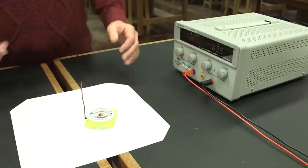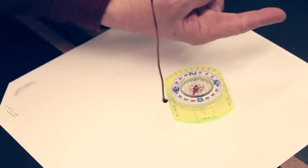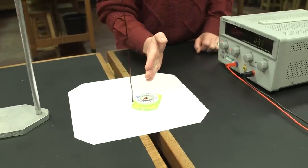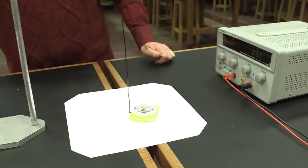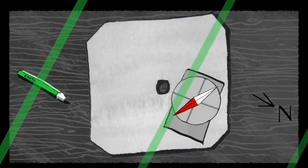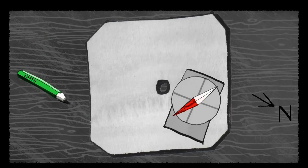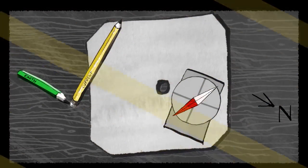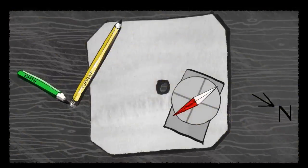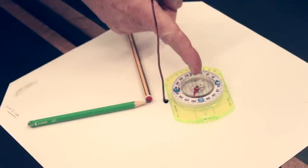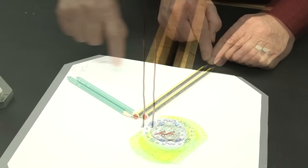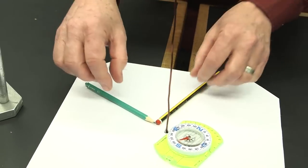Now you can think of this as being a magnetic field this way, and a magnetic field pointing that way. The sum of these two magnetic fields, I can represent by saying that's the Earth's magnetic field, and this is a much bigger magnetic field at right angles to it, because I've turned this round by 90 degrees. So the compass needle tells me the direction of this resultant magnetic field, the sum of these two.